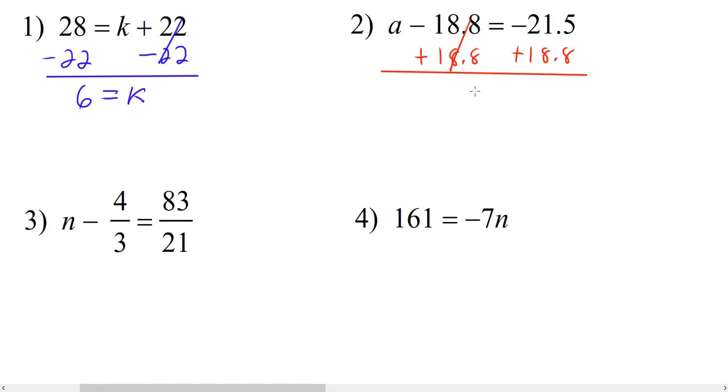On the left, these cancel out, leaving us with a. And on the right, we have negative 21.5 and a positive 18.8. Different sign, subtract, and keep the sign of the bigger number, so our answer is negative 2.7.